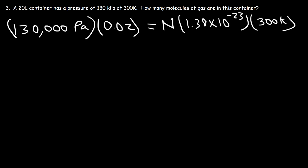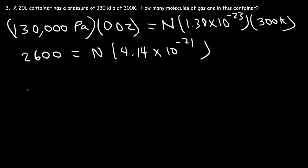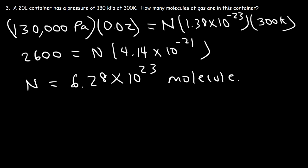Multiplying 130,000 × 0.02 gives 2,600. Then 1.38 × 10⁻²³ × 300 = 4.14 × 10⁻²¹. So N equals 2,600 divided by 4.14 × 10⁻²¹, which gives 6.28 × 10²³ molecules. That is the number of molecules of gas in this container.